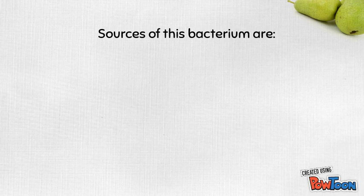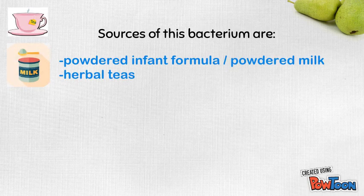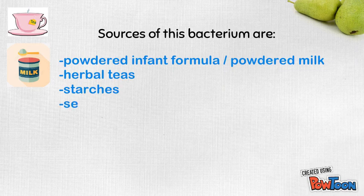Chronobacter is said to grow and survive in dry places and food. Some reported sources of this bacterium are powdered infant formula or powdered milk, herbal teas, starches, sewer water, or milk factory equipment.